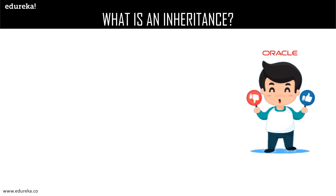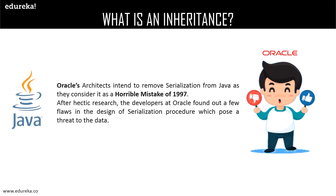Now let us move on to the controversies based on serialization in Java. Oracle's architects intend to remove serialization from Java as they considered it a horrible mistake of 1997. Developers at Oracle found flaws in the design of the serialization procedure posing a threat to data. In 1997, Mark Renault stated: 'We like to call serialization the gift that keeps on giving — the type of gift it keeps giving is security vulnerabilities. Probably a third of all Java vulnerabilities have involved serialization, it could be over half.' There are chances that serialization would be removed or replaced in upcoming Java updates.